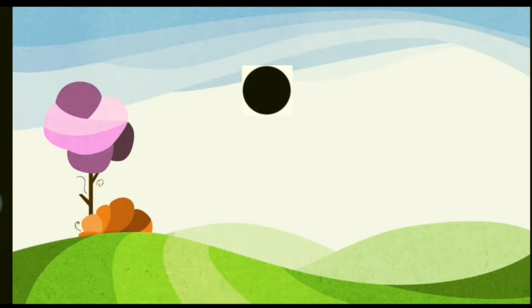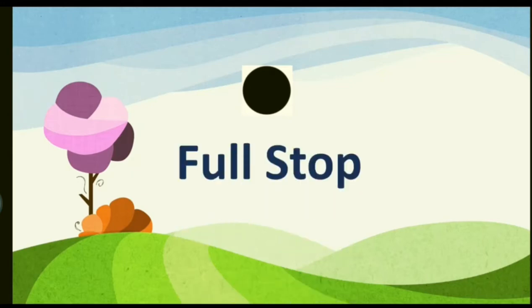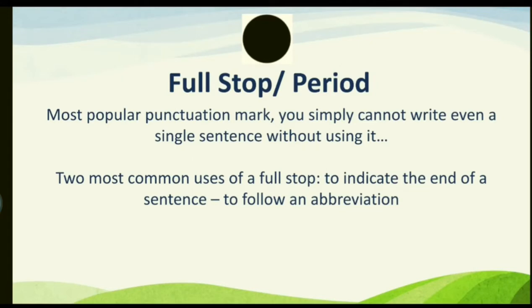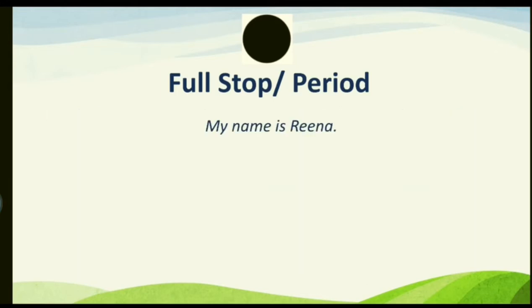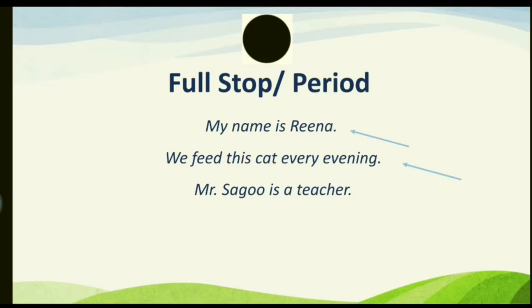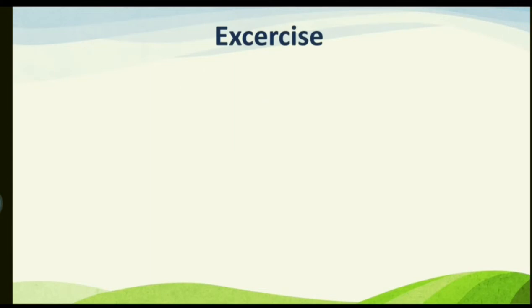Now we move on to the next punctuation mark — the full stop, also called a period. It is the most popular punctuation mark; you simply cannot write even a single sentence without using it. The two most common uses are: to indicate the end of a sentence, and to follow an abbreviation. For example: 'My name is Rina.' — full stop at the end. 'Mr. Sagu is a teacher.' — full stop after 'Mr.' because it is abbreviated.